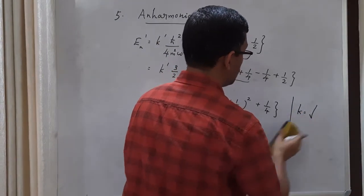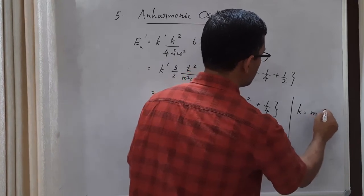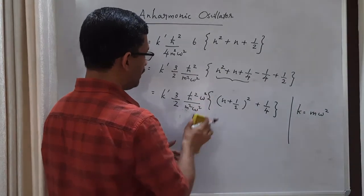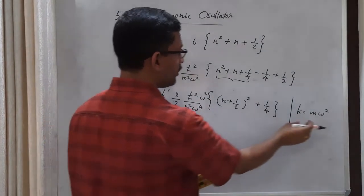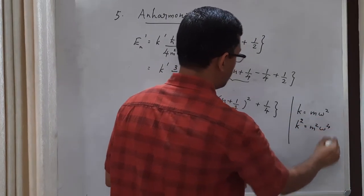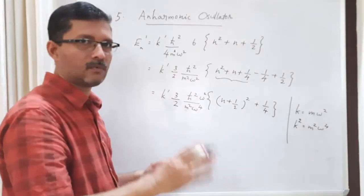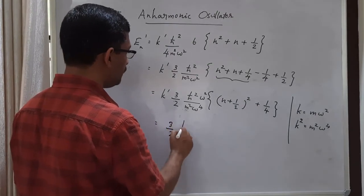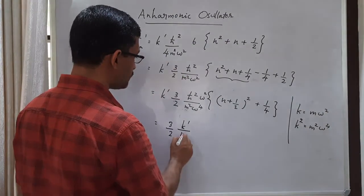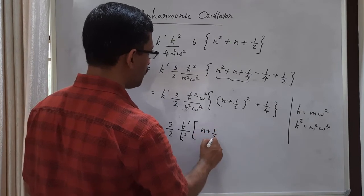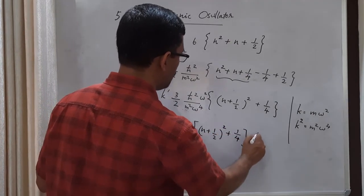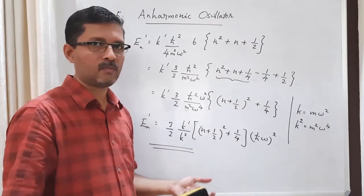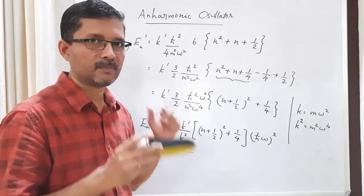Further, using k = mω², if we multiply numerator and denominator by ω², then m²ω⁴ = k². So the first-order energy correction is Eₙ¹ = (3k′/2k²)(ħω)²[(n+1/2)² + 1/4]. This is the first-order correction in energy for an anharmonic oscillator — a harmonic oscillator with a quartic perturbation.